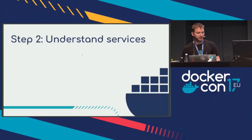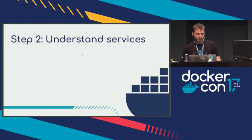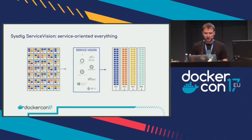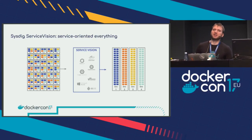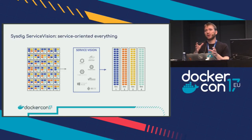The second aspect — something not heavily considered at first — is the ability to understand services. Just because you're able to observe your container doesn't mean you can do much with that data, unless you can correlate the service that this container is implementing. In this picture, we have a bunch of services, hosts, and containers — each container colored by the service it implements. This could be a swarm task, a Kubernetes deployment, and so on.